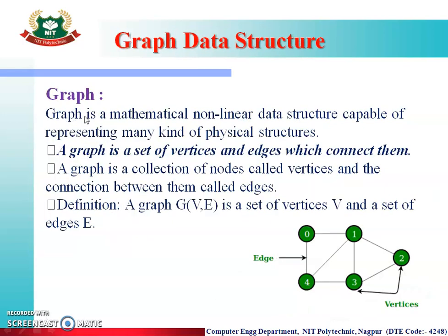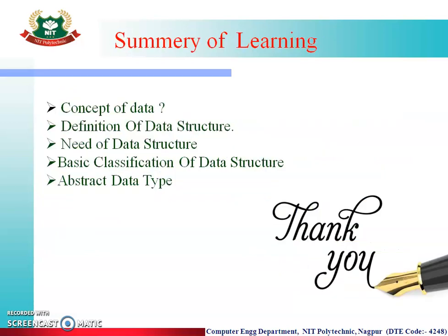Next is the graph data structure. Graph is used in electric circuits and network maps. Graph is a mathematical non-linear data structure capable of representing any kind of physical structure, such as maps and electric circuits. A graph is a set of vertices and edges. From this video, you have learnt about the types of data structures including trees and graphs, their classification, and basic working.